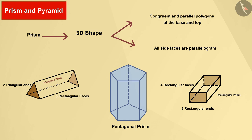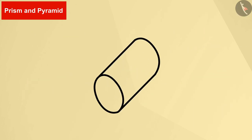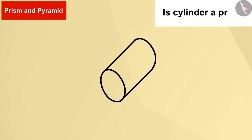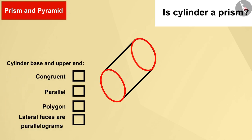Of a prism, is cylinder a prism? Let us know. Let's discuss this. Its base and upper ends are circles and parallel to each other, but the ends of the cylinder are curved. That is, it is not a parallelogram. Therefore, it is not a prism.